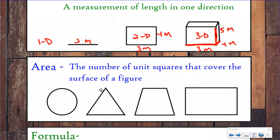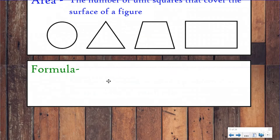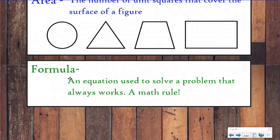You should be writing these mathcabulary words down every lesson in your notes. If you don't have your notes, check out the description for this video — there's a link to a Google Doc you can either print or type on. Area is the number of unit squares that cover the surface, or the inside, of a figure. Our last vocabulary word today is formula: a formula is an equation used to solve a problem that always works — it's a math rule. We're going to be discussing the area formula today and where it comes from.